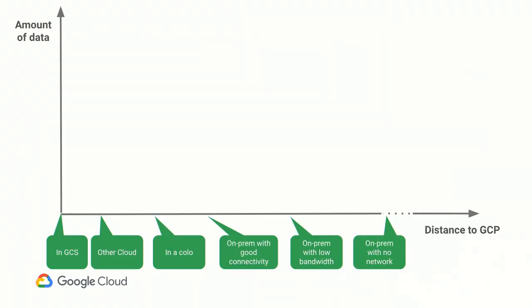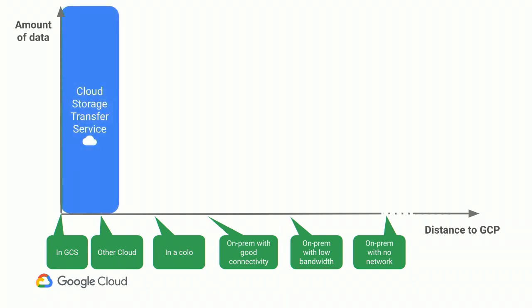Another way to think about this is how 'close' or 'far' your data is based on your bandwidth. On one end of the spectrum is data close to you — for instance, moving data between two Google Cloud data centers over a very high-bandwidth pipe Google has provisioned. On the other end, a data center with a slow satellite link or no internet connection at all, where even a small amount of data will take a long time. This spectrum helps frame the transfer options available in Google today.